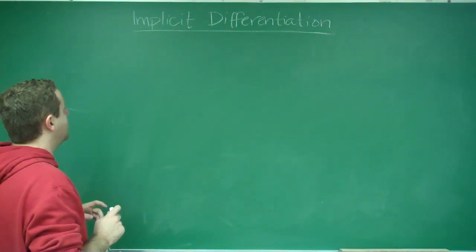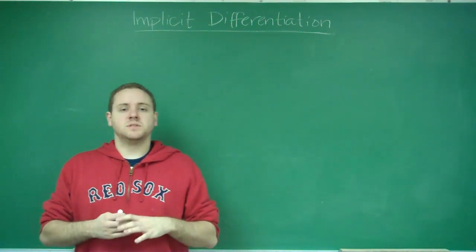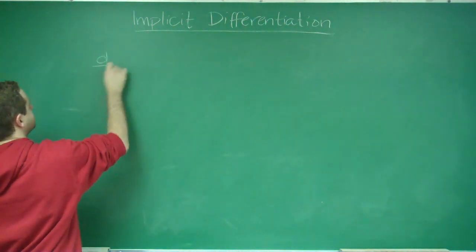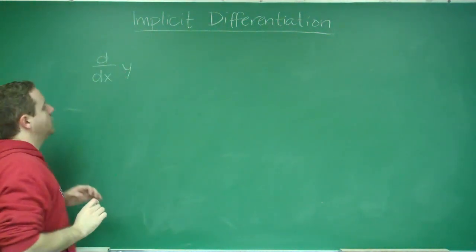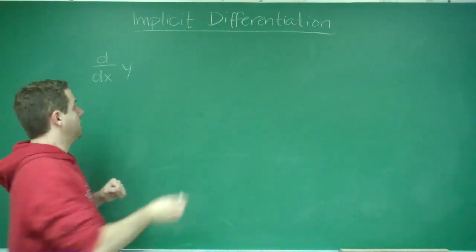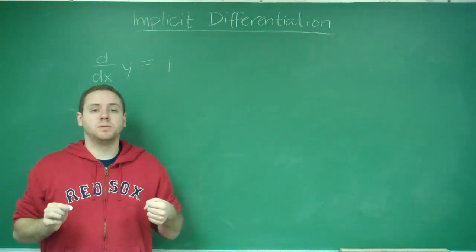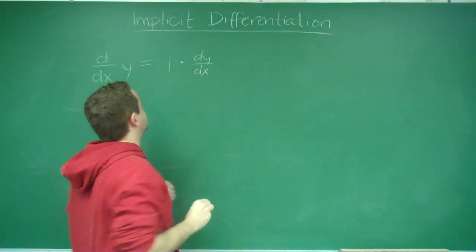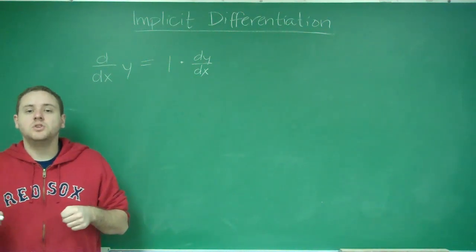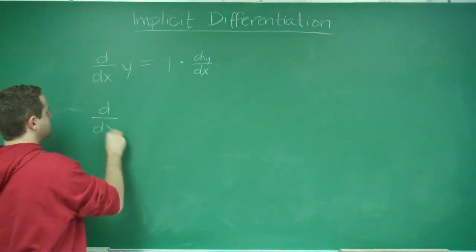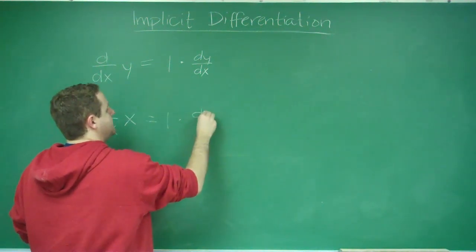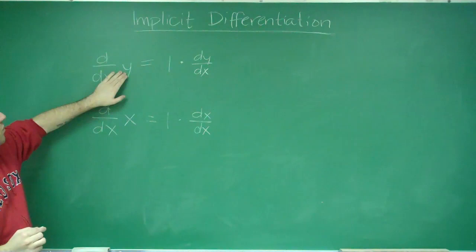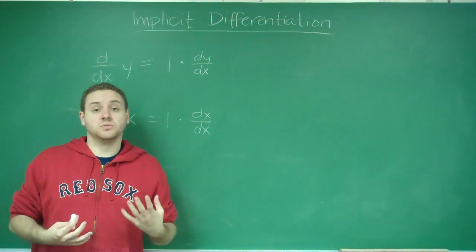The key to implicit differentiation is that you treat y and x as their own variables. The only difference is whenever you take the derivative of a y, because of the chain rule, the derivative of a variable by itself is always just 1. But because of the chain rule, you have to multiply by the derivative of it. The derivative of a y is dy/dx if you're doing the derivative with respect to x. You can think of this as when you took the derivative of x, you get 1 times dx/dx, which is just 1, so the derivative of x is 1. But the derivative of y with respect to x is dy/dx, your derivative term.